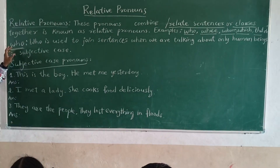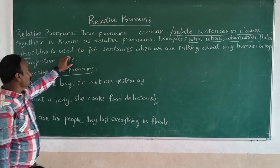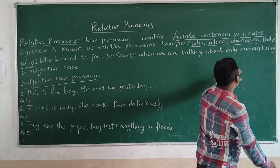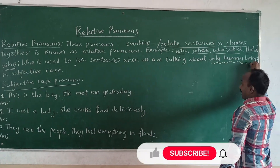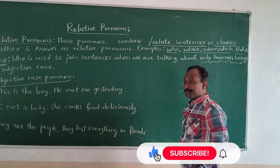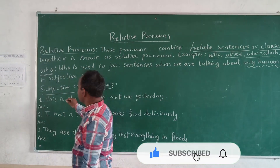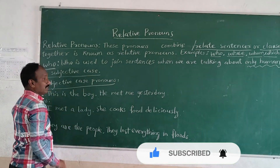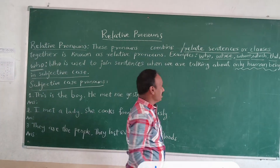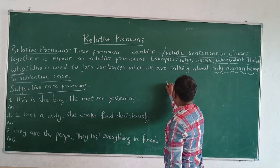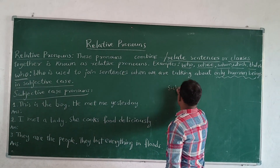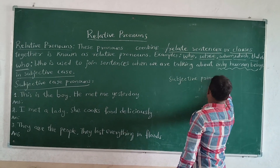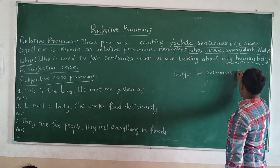Now first we will see 'who'. Who is used to join sentences when we are talking about only human beings, and who is used for only human beings in subjective case. What do you mean by subjective case?